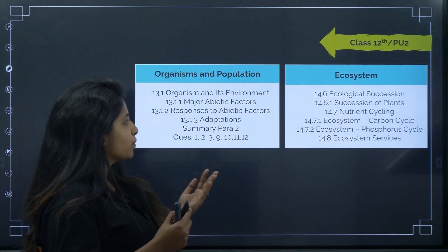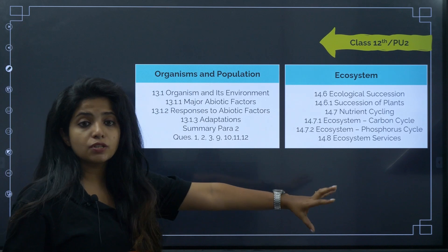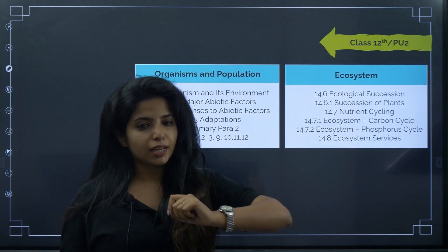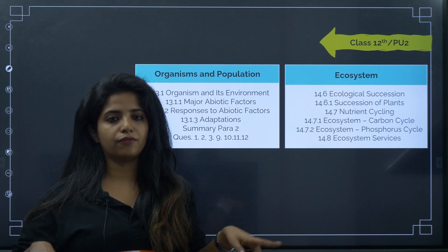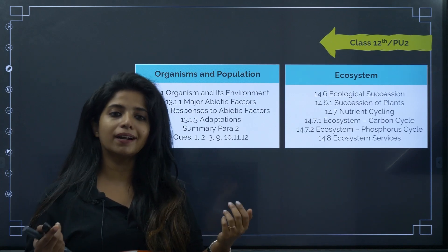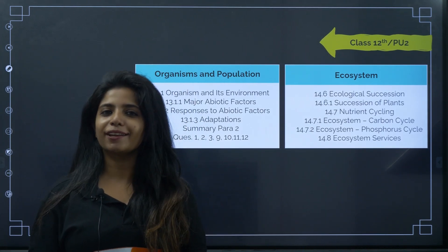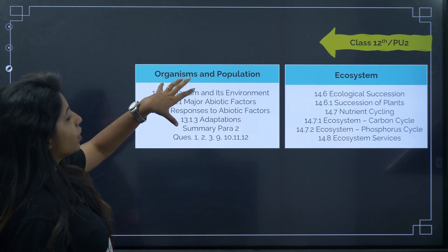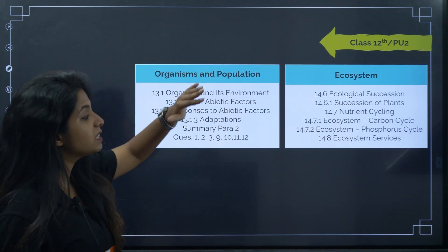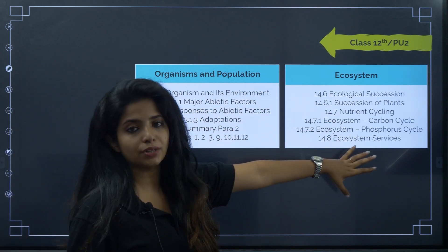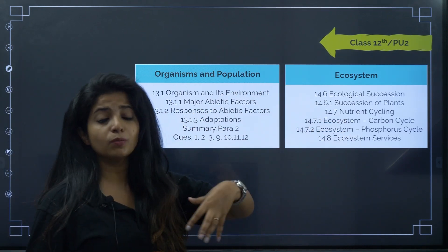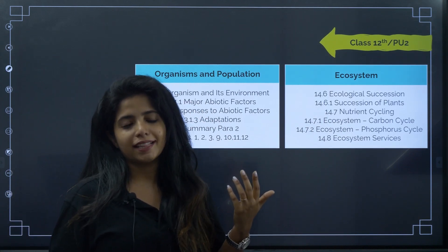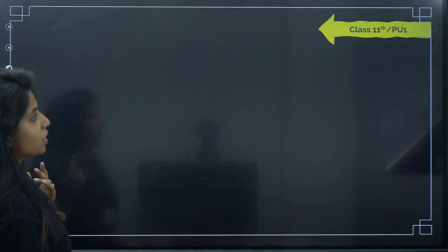Please don't waste your time studying deleted content. I'll put the link for the PDF with all deleted content in the comment box so you can refer to it whenever you want. 'Organisms and Population' is not fully deleted but certain topics within it are. Nutrient cycling and related content has probably been removed because it was studied earlier.